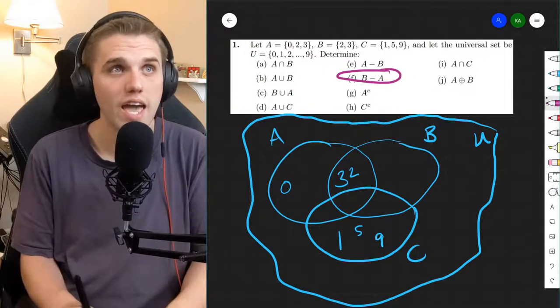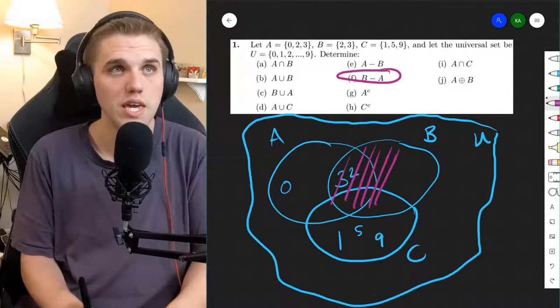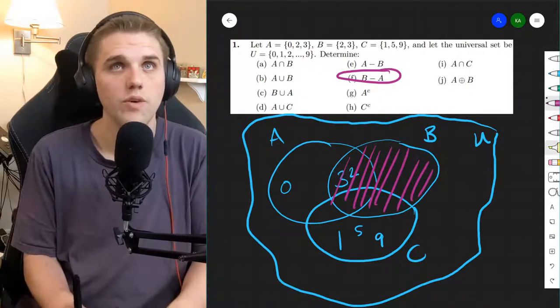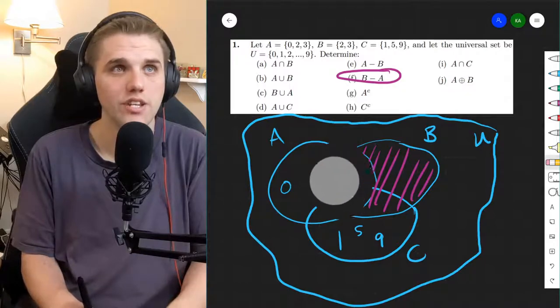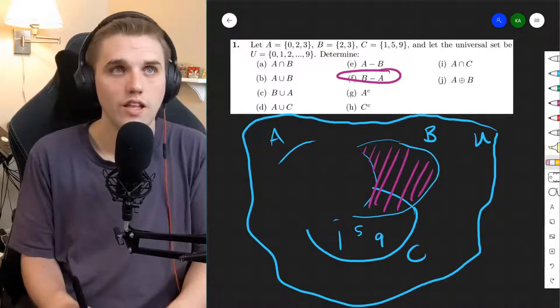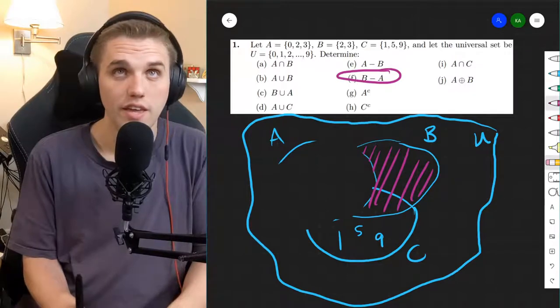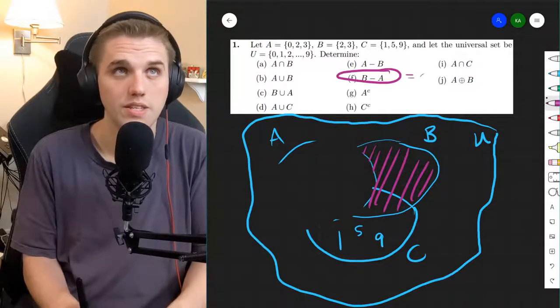All right, F, B minus A. So in this case, we start with B and then we subtract A from that selection. And so what do we have in there? Well, it looks like nothing. So this is the empty set.